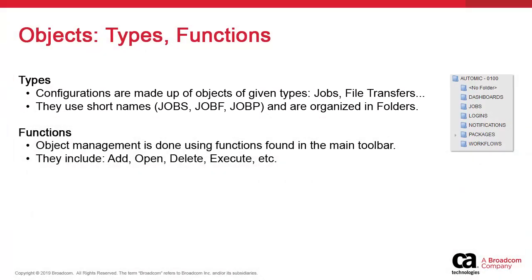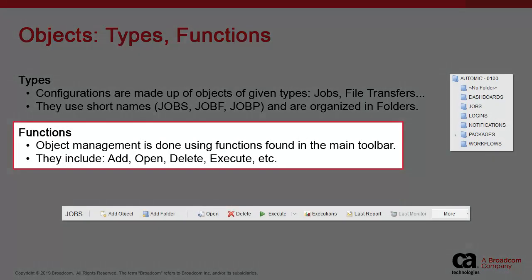Atomic Automation uses conventional object management capabilities in the form of functions such as Add, Open, Delete, and Execute, which are found in the various toolbars of the solution.